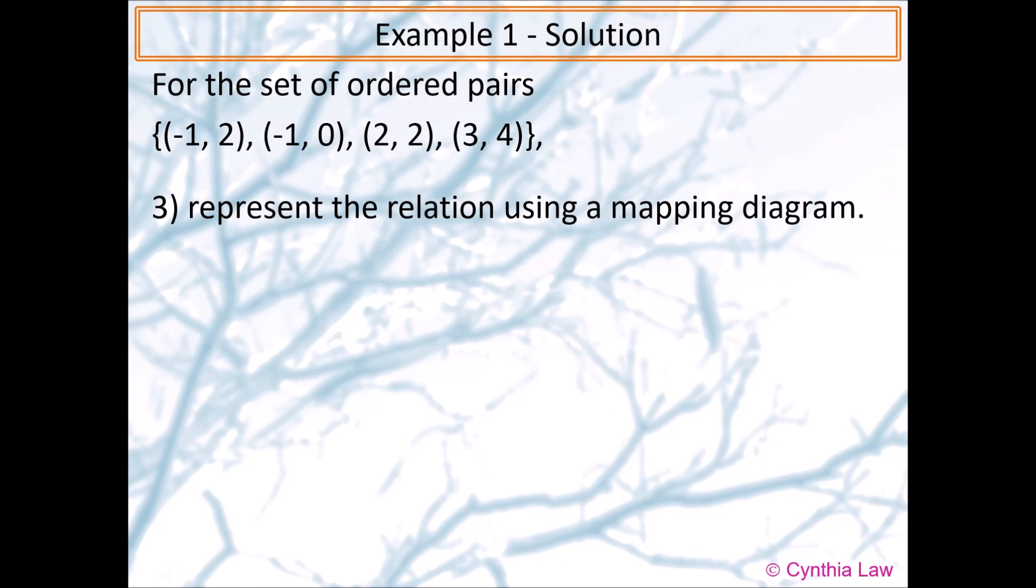Lastly, we want to represent the relation using a mapping diagram. So first, we draw two ovals to represent a domain and range. And then we want to fill in the domain with values. So I have negative 1, 2, and 3 from the ordered pairs.